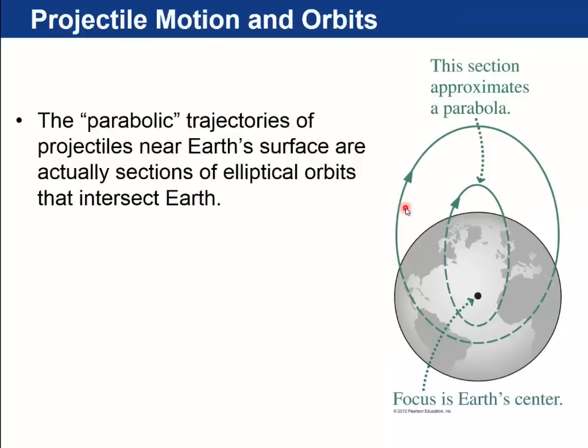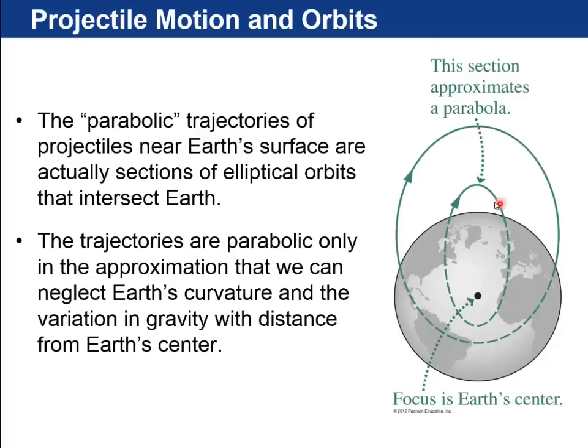And then the third law is that the square of the orbital period of a planet is directly proportional to the cube of the average distance of the planet from the sun. And we'll go over that a little bit more in a future slide. So we were taught in a previous chapter that the path of projectiles are parabolas. Okay, so what we're saying here is that the trajectories are parabolic in the approximation that we can neglect Earth's curvature and the variation of gravity with distance from Earth's center is not very much. So the real path of any projectile if you throw a ball up and down is actually an ellipse with a focus at the Earth's center, but it looks like a parabola as long as it's not too high.